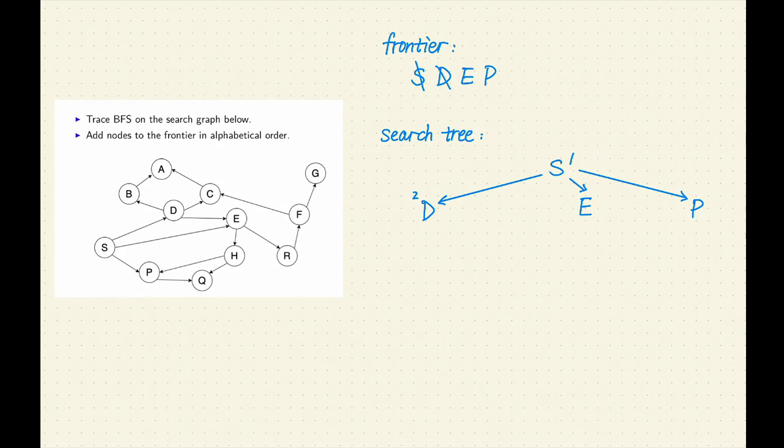D has three successors: B, C, and E. Let's add them to the frontier in alphabetical order and add them to the search tree.